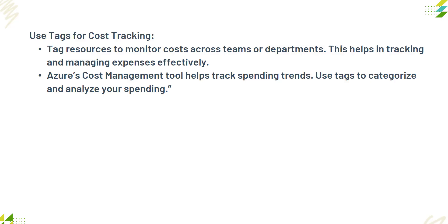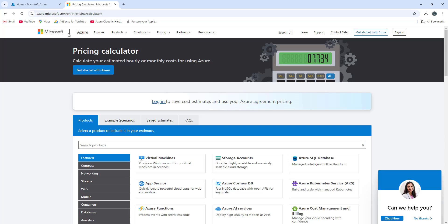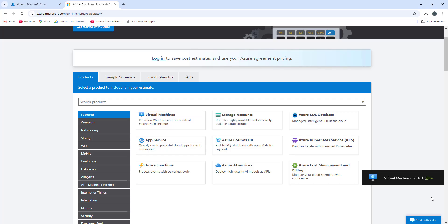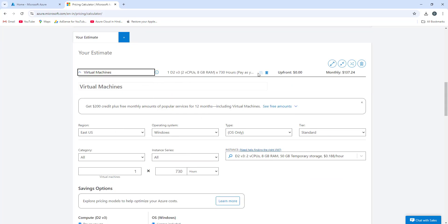Let's take an example: management has given you a task to find out the cost of running a VM — say D2v3 — for pay-as-you-go, for one year, and for three years. Microsoft provides the Azure Cost Calculator for this. Open the calculator link, click on Azure Virtual Machines, and click View.